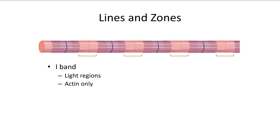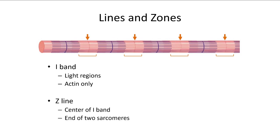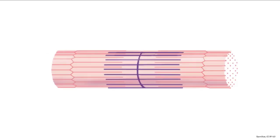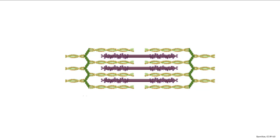The A-bands are the dark regions made mostly of myosin, with some overlapping actin within them. The M-line is the center of the A-band. Looking at a sarcomere, we can see Z-lines coming in together — myosin stays the same, but it is pulling the Z-lines in together, and this is how a muscle shortens.